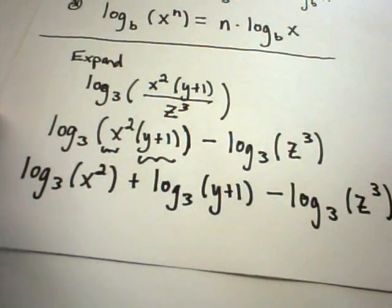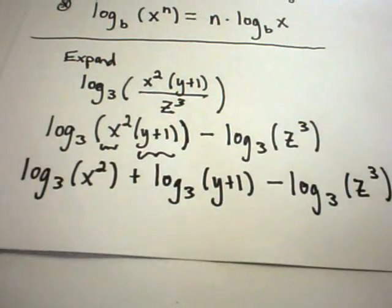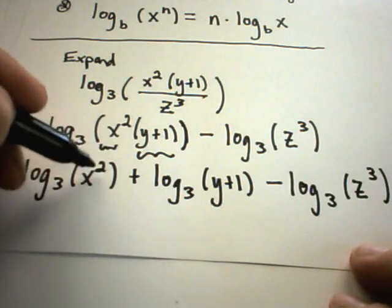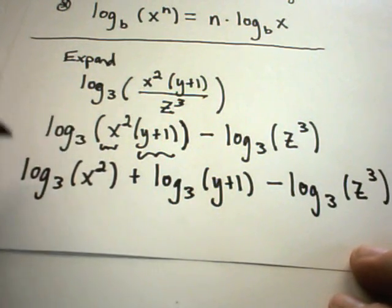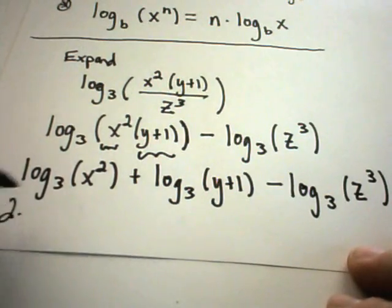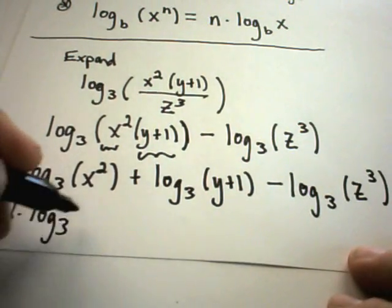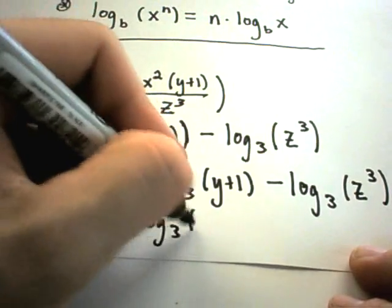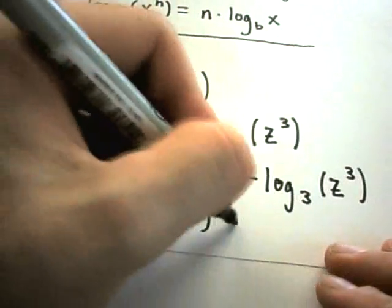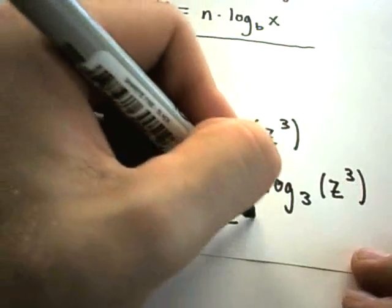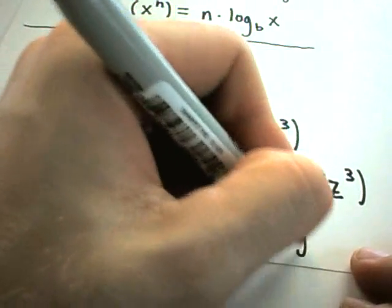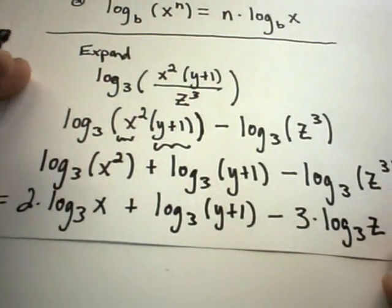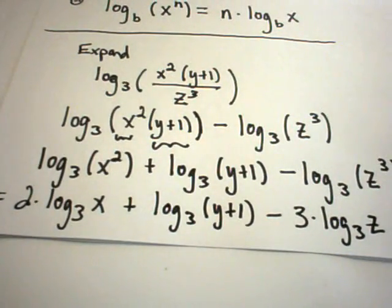Somebody's trying to call me, I don't know if you're getting that. Anyway, the last step to finish this out is to simply, we can now use this exponent rule. We can pull the exponents out front as coefficients. 2 times log base 3 of x. Nothing to do on the middle one. Log base 3 of y plus 1. Again, to pull the coefficient out. 3 times log base 3 of z. And, now, this original logarithm has been expanded into an equivalent logarithm.